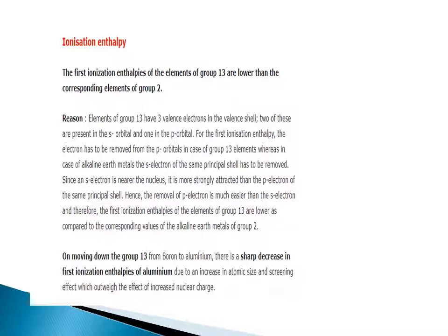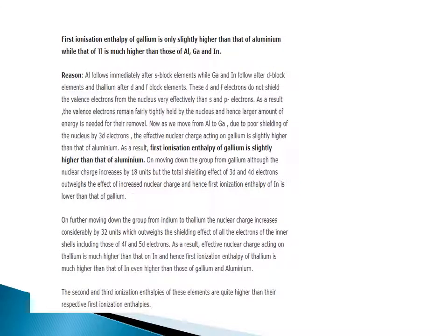On moving down group 13 from boron to aluminium, there is a sharp decrease in first ionization enthalpy of aluminium due to an increase in atomic size and screening effect, which outweighs the effect of increased nuclear charge. The first ionization enthalpy of gallium is only slightly higher than that of aluminium, while that of thallium is much higher than that of aluminium, gallium, and indium. Aluminium follows immediately after s-block elements, while gallium follows after d-block elements and thallium after d- and f-block elements. These d- and f-electrons do not shield the valence electrons from the nucleus as effectively as s- and p-electrons.